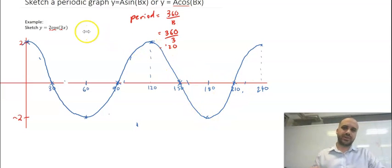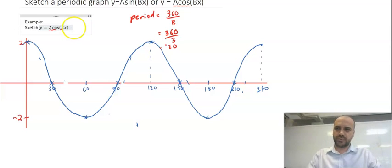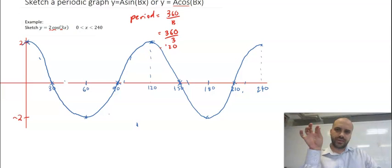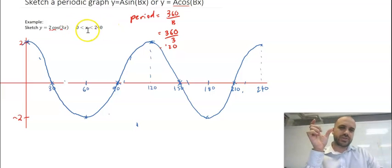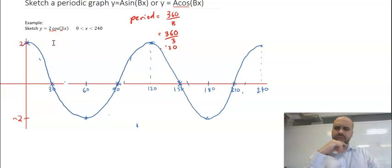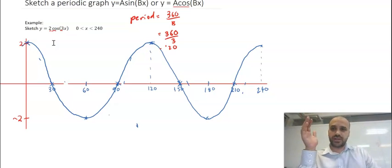The question will probably tell you how much you should sketch. My question should have said something like 0 is less than x, less than 240. You can see I've sketched this from 0 all the way to 240. Make sure that you are checking to see how far you're supposed to sketch, how many periods of the graph. I might do one more. I'm going to move through this next one a little bit faster.